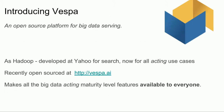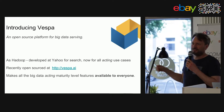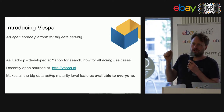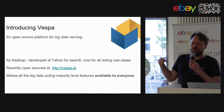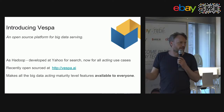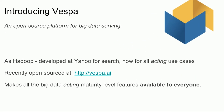Vespa is a system that provides those features — that's its role in the big data ecosystem. It was originally developed at Yahoo in the web search division. The IP rights around search are really nightmarish, so it took almost 15 years to be allowed to open source it — we actually waited for some patents to expire. Now it's open source, available at vespa.ai.